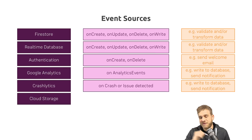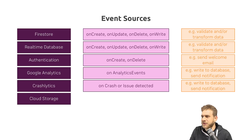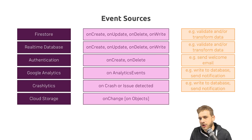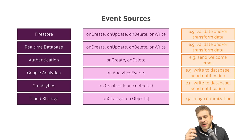Cloud Storage is another very useful event source. Cloud Storage is the Firebase product where you can store files — you can easily upload them through the Firebase SDK. Here you can listen to onChange events which occur whenever an object is added. A typical example is image optimization: a user uploads an image and you want to create three different versions in three different sizes. The Cloud Storage trigger tells you when a file is added, you check if it's an image, and then resize it into the three formats you want.